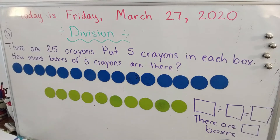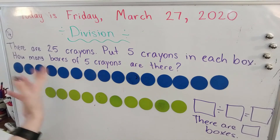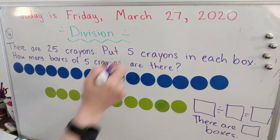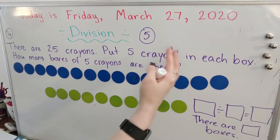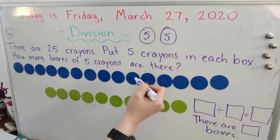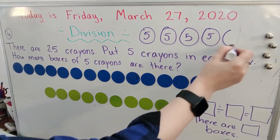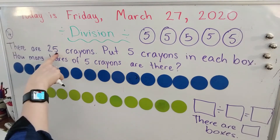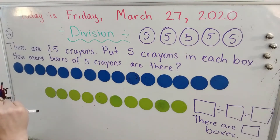Number four. There are 25 crayons. Here are my 25 crayons. It says put five crayons in each box. How many boxes of five crayons are there? So if we didn't have all of these counters to represent our crayons, and we just wanted to count in our heads, we can say each box has five crayons and keep counting by fives. Two boxes would be 10 crayons, three boxes would be 15 crayons, four boxes would be 20 crayons, five boxes would be 25 crayons. Five, 10, 15, 20, 25 — that's five boxes with five crayons each.